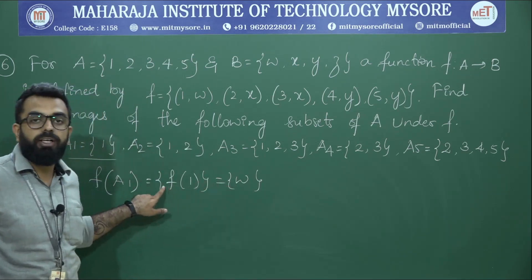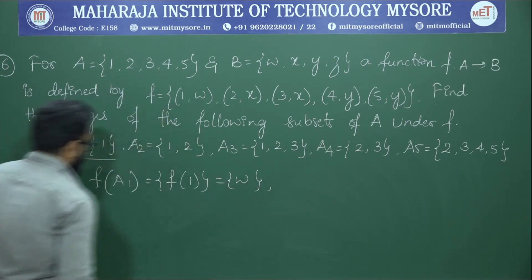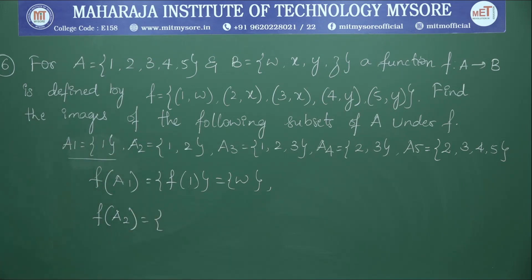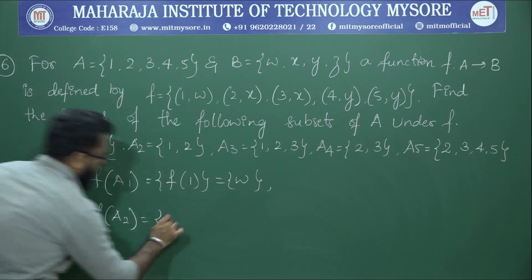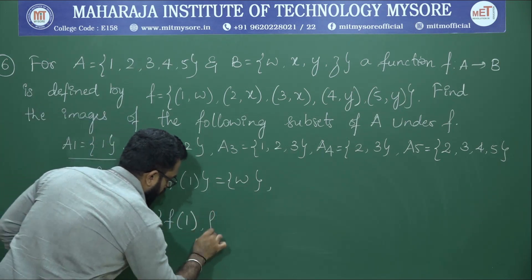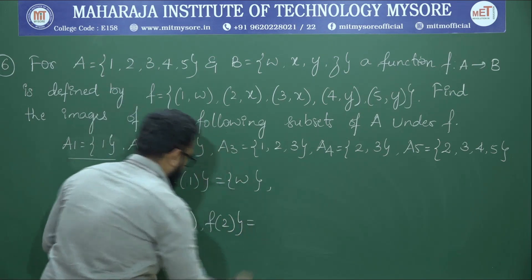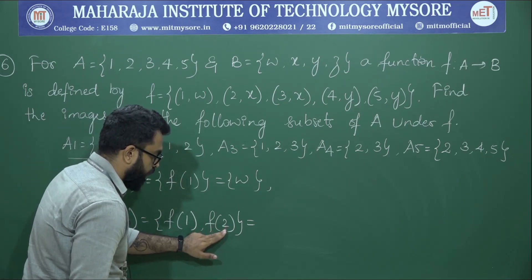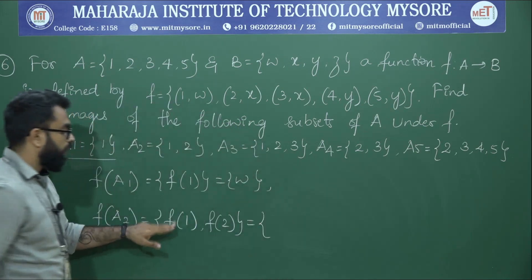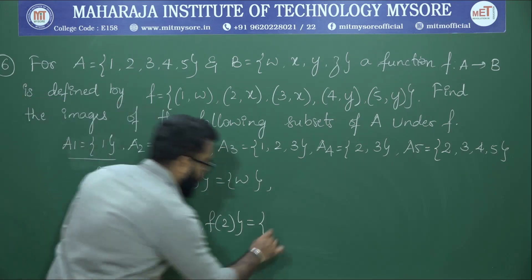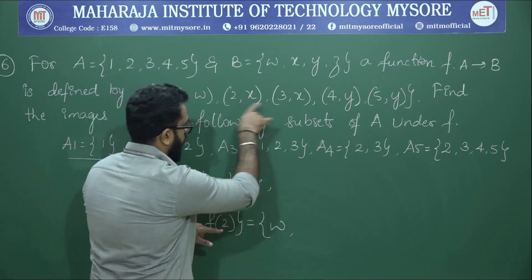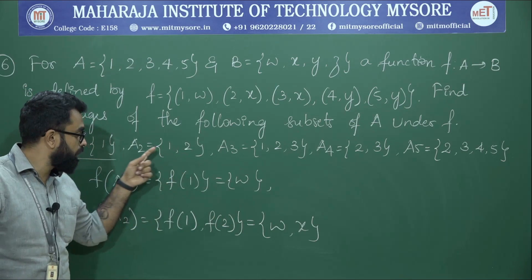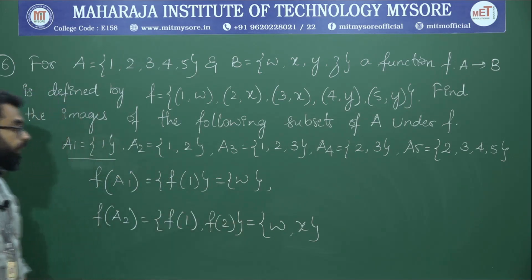Similarly, for the second subset A2 = {1, 2}, we find f(1) and f(2) separately. The image of 1 is w, and the image of 2 is x. Therefore, the image of subset A2 under function f is {w, x}.